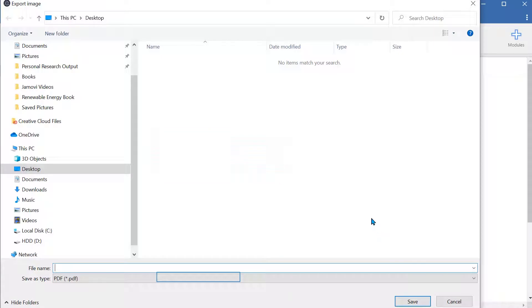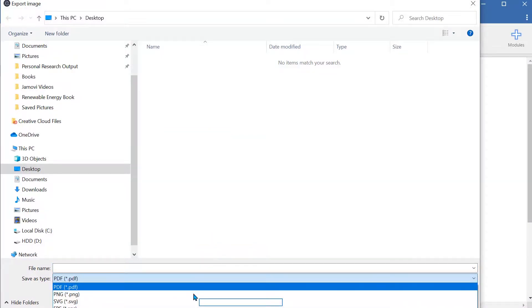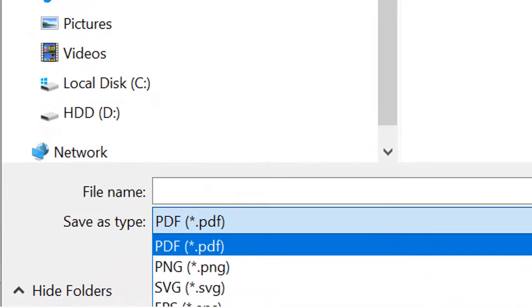If we export it, we can save it as a PNG, SVG, or EPS. So we have four options to save it as an image.